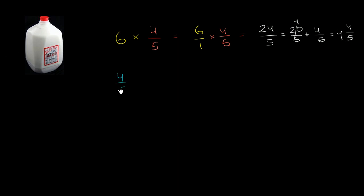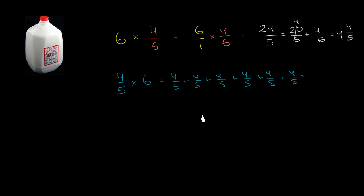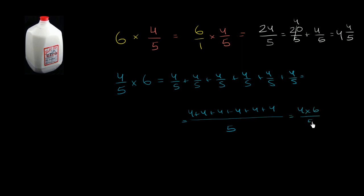The other way, you could think of this as 4 fifths times 6, which is the same thing as 4 fifths plus 4 fifths plus 4 fifths plus 4 fifths plus 4 fifths plus 4 fifths. So we took literally six 4 fifths and added them together. This is going to be 4 plus 4 plus 4 plus 4 plus 4 plus 4 over 5 — this is how many fifths we have. Well, this is 6 times 4, or 4 times 6 over 5, which is equal to 24 over 5, which is 4 and 4 fifths.